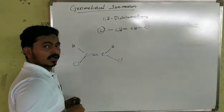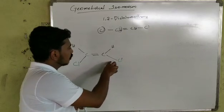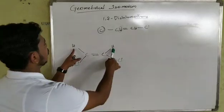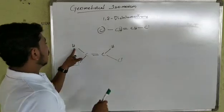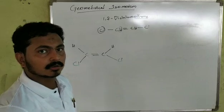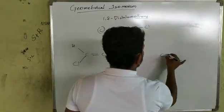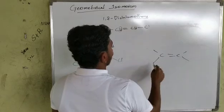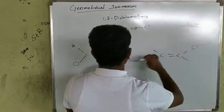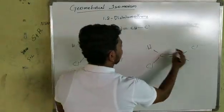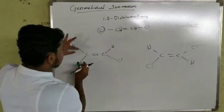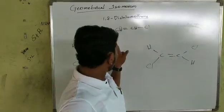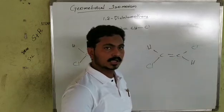Hydrogen is not in the same position in both arrangements. In one structure we have hydrogen and hydrogen on the same side, with chlorine and chlorine on the other side. In another structure, each carbon has one hydrogen and one chlorine. This gives us 1,2-dichloroethene.